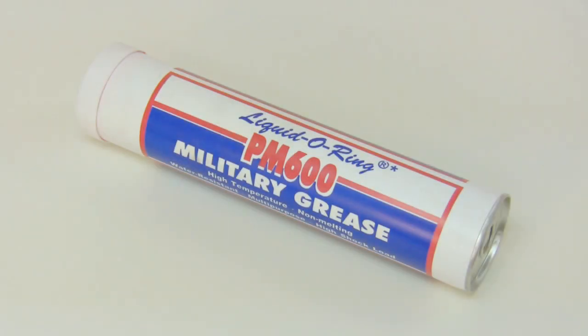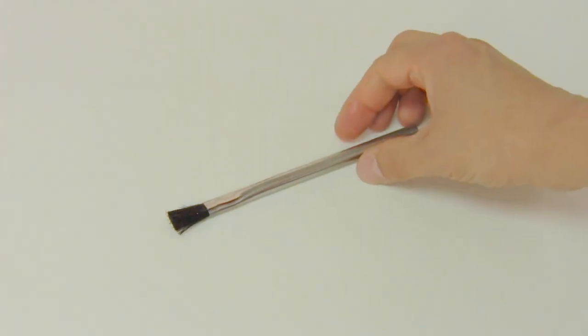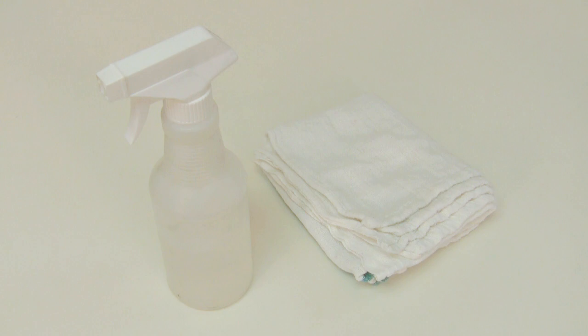For greasing parts, use liquid O-ring PM600 military grease and an applicator brush. For cleanup, use isopropyl alcohol with a lint-free rag.